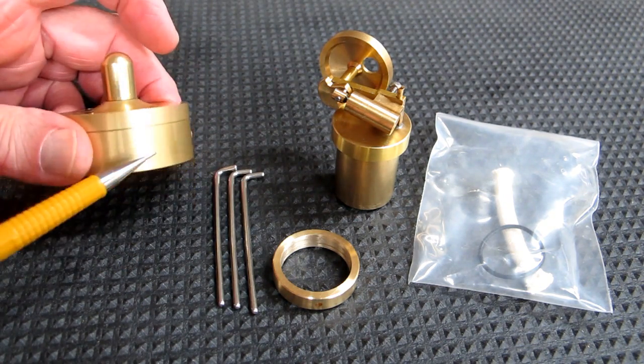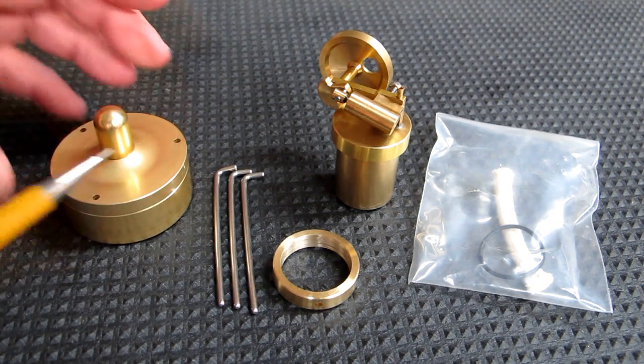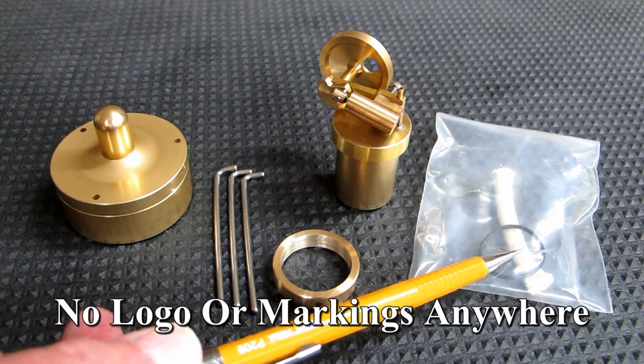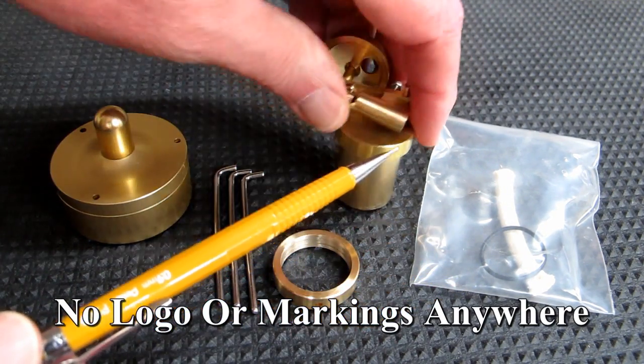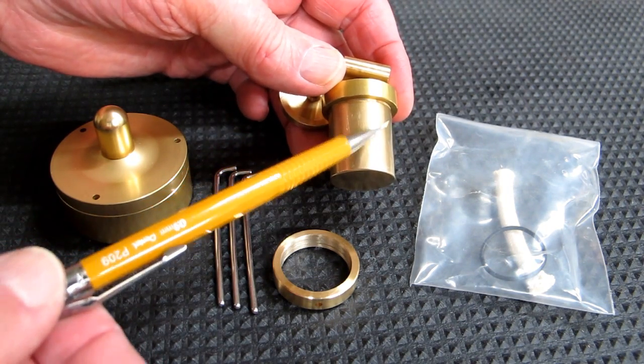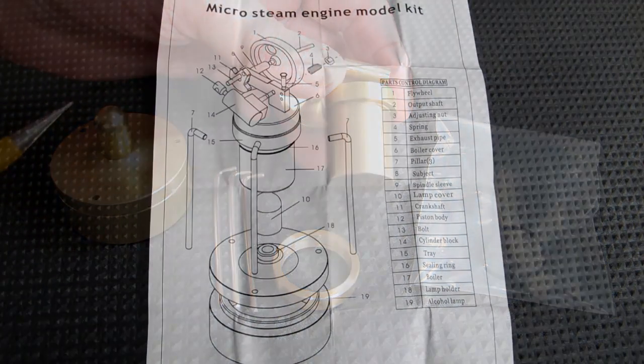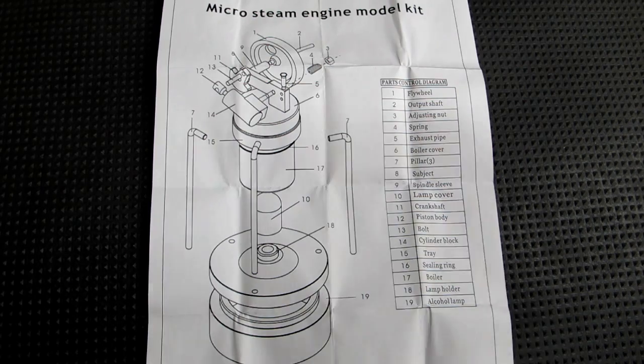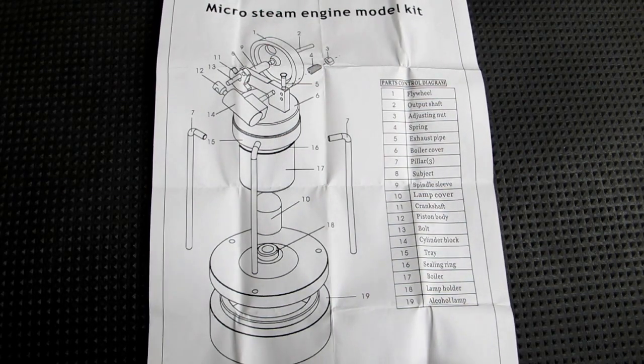It's very nicely machined. There's no scratches or anything in this and it comes with a spare wick and a spare O-ring. The O-ring goes up here and seals the boiler to the top of the boiler. There is a one-sheet exploded view showing all the pieces for the steam engine.